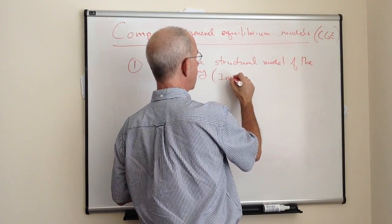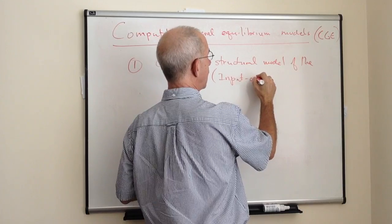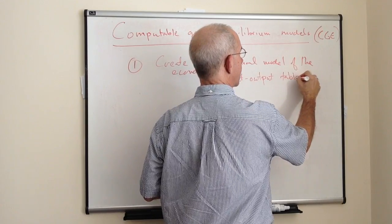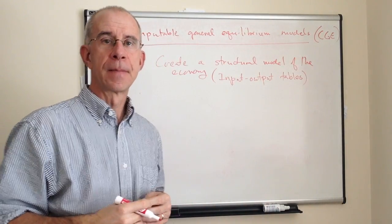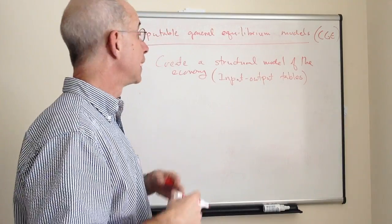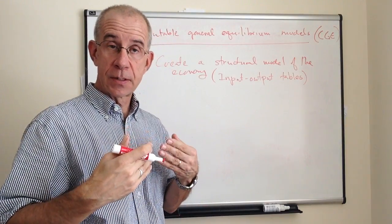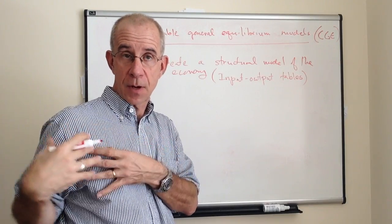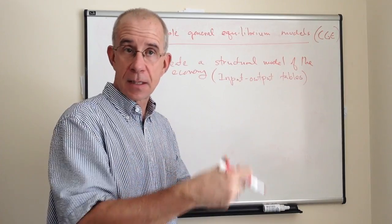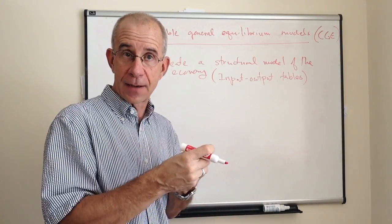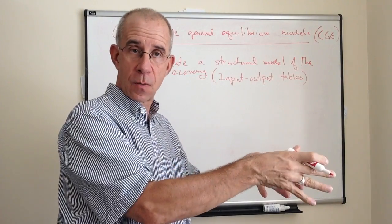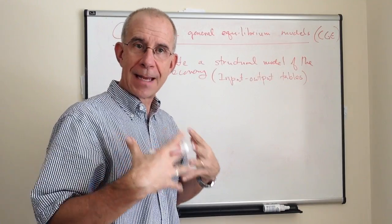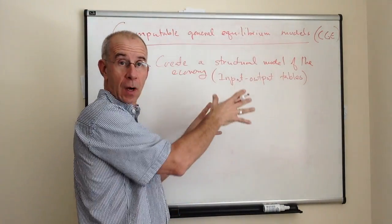It should be no surprise that a critical part of a CGE is the input-output table of a particular country. The input-output table is relating the inputs in the production process, the amount of capital, the amount of skilled labor, the unskilled labor, the land, these primary factors, along with all the intermediate inputs that go into the final production. This is one of the major features of this structural model.